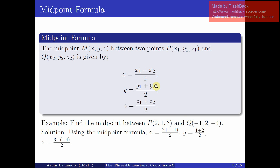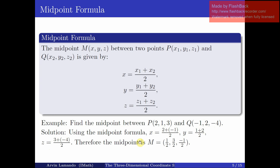Let's see this in action. To find the midpoint between P and Q, we use the formula. The midpoint X coordinate is (2 + (-1)) / 2, Y is (1 + 2) / 2, and the Z coordinate is (3 + (-4)) / 2. This simplifies to (1/2, 3/2, -1/2), so the midpoint between P and Q is given by this.